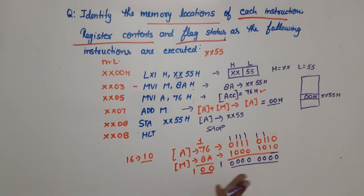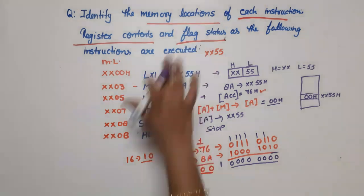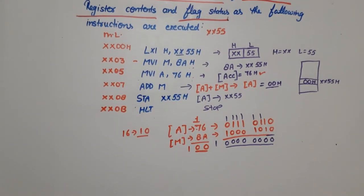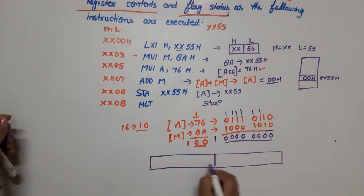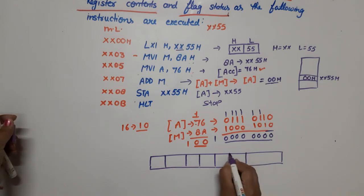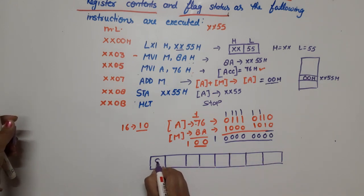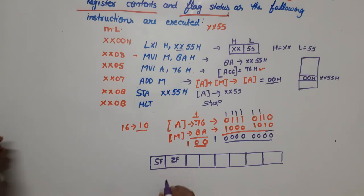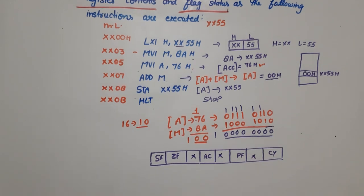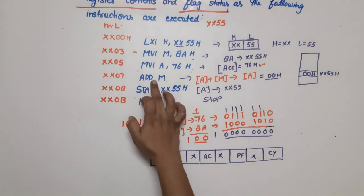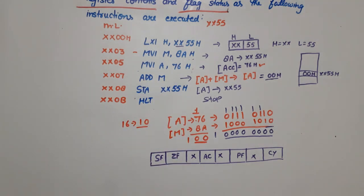Now we do the third part: flag status. We need to know the flags, so I will draw the flag register first. This is our 8-bit register. The bits are: sign flag, Z flag, auxiliary carry flag, parity flag, and carry flag. The undefined bits we take as 0. The arithmetic operation ADD M updates our flag status, so let's check each flag.